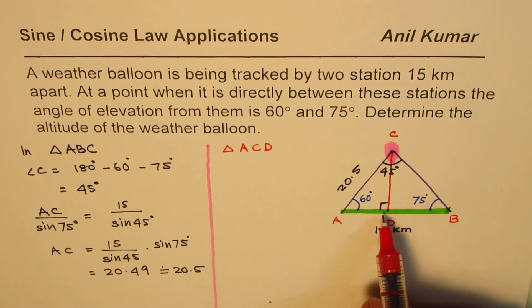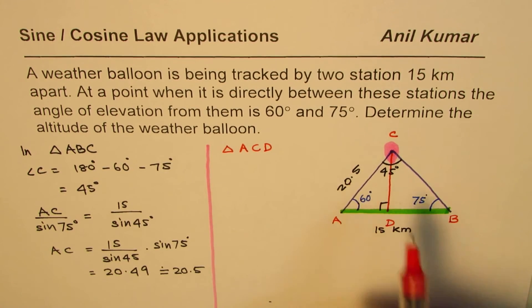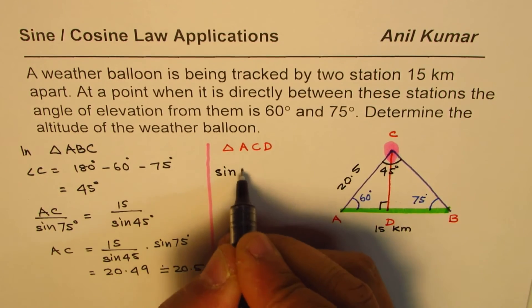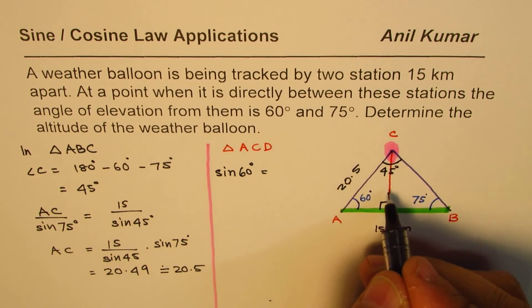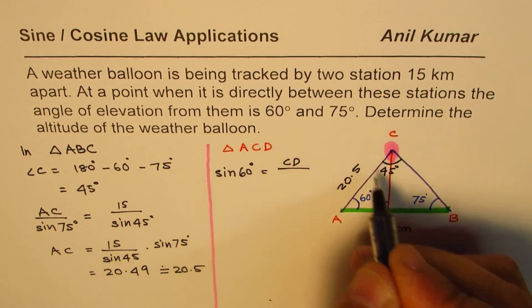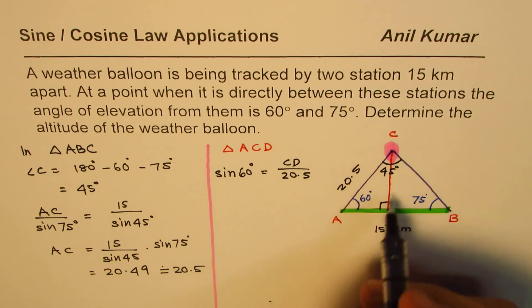Now in this particular triangle we know the angle and the hypotenuse. We need to find the opposite side. So the opposite side can be calculated with sine of the angle. So we have sine of 60 degrees is equal to opposite over hypotenuse, that is CD over the hypotenuse 20.5.